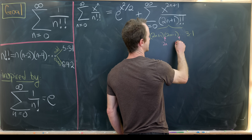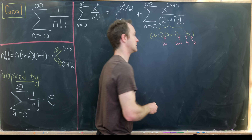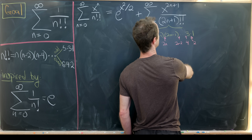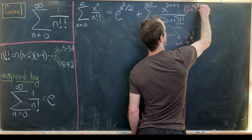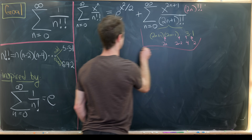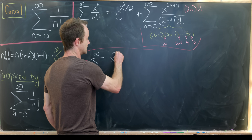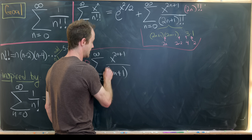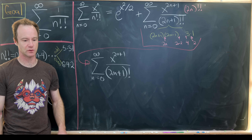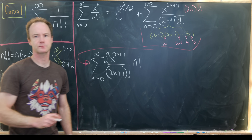Including the even numbers means inserting 2n, 2n minus 2, down to 4 and 2 into the denominator. To compensate, we multiply the numerator by 2n double factorial. That leaves us with the sum of x to the 2n plus 1 over 2n plus 1 single factorial, since we now have all the terms, times 2n double factorial. By the same calculation as the even case, 2n double factorial equals 2 to the n times n factorial.